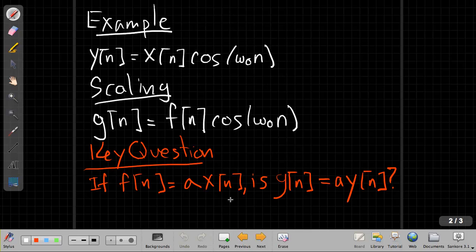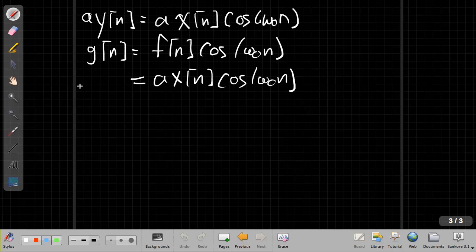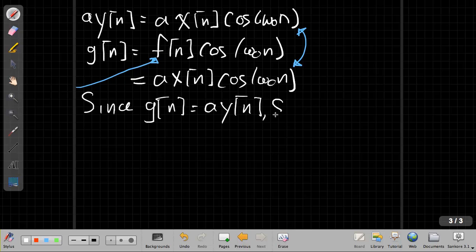We say well a y of n is going to be a times x of n times cosine of omega naught times n. And meanwhile, is that equal to g of n? Well we know g of n is f of n cosine omega naught n. And we're assuming f of n is equal to a x of n. By taking this bit here, bringing it over to our new page, and putting it in here for f of n, I look at these two and those are equal. Since g of n is equal to a times y of n, scaling holds.